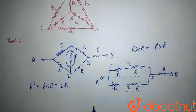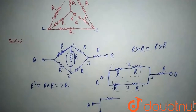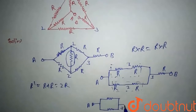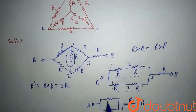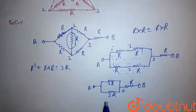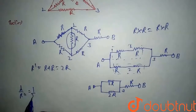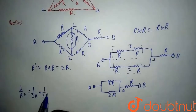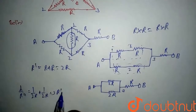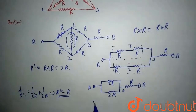Redrawing again: from A we have two branches each of 2R. These two 2R resistors are connected in parallel. The equivalent resistance R_dash is given by 1/(2R) + 1/(2R), which gives R_dash equals R.